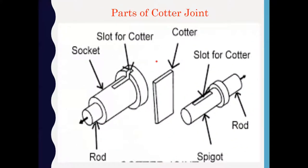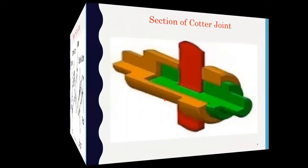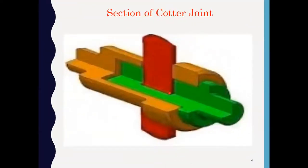These are the views of the parts of the cotter joint. This is the socket, this is the spigot, and this is the cotter. A slot is provided in the socket as well as in the spigot to insert the cotter. This is the section of the cotter joint. The green portion is the spigot, the brown portion is the socket, and the red portion is the cotter.